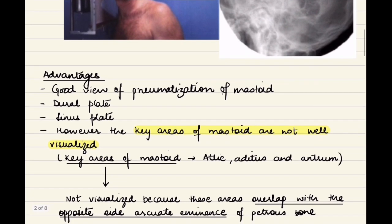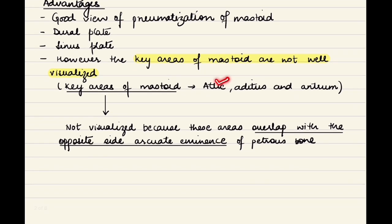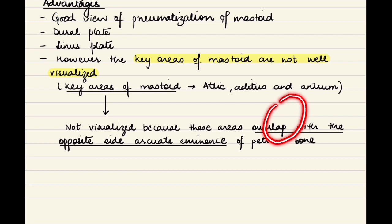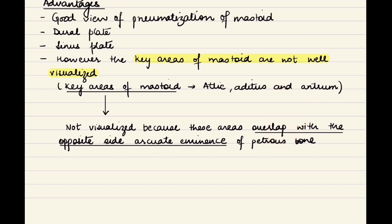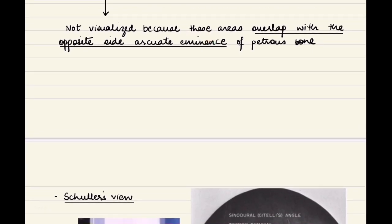However, we are unable to see the key areas of the mastoid well. The key areas of the mastoid are the attic, the aditus and the antrum. To recapitulate the anatomy: this is the right middle ear, and this being the epitympanum or the attic. This is connected to the mastoid antrum by the aditus. These are the key areas of the mastoid and we are not able to appreciate them well by Law's view, as there is overlapping from the opposite petrous bone — specifically the arcuate eminence of the opposite petrous bone.